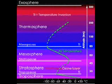The troposphere is the bottom layer closest to the Earth's surface of the Earth's atmosphere. As it rises, the temperature decreases in the troposphere. In the troposphere occur the phenomena that make up what we call weather.